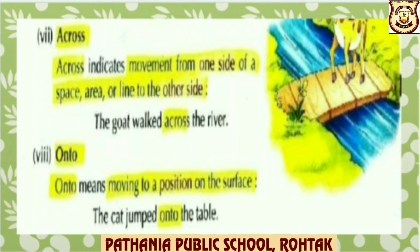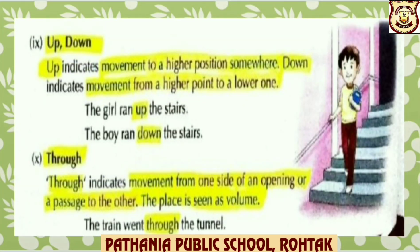Onto — onto means moving to a position on the surface. For example: The cat jumped onto the table. Up and down — the preposition 'up' indicates movement to a higher position, while 'down' indicates movement from a higher point to a lower one. For example: The girl ran up the stairs — to the higher position. Next: The boy ran down the stairs — from the higher point to the lower one.